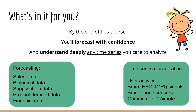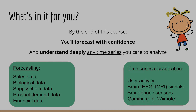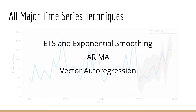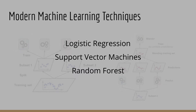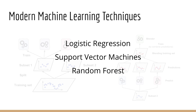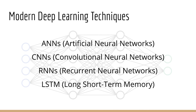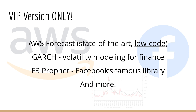You'll also learn how to classify time series data — for example, predicting user actions based on their smartphone sensors. This course will cover all major time series techniques such as ETS and exponential smoothing, ARIMA, and vector autoregression. We'll also look at modern machine learning-based techniques such as logistic regression, support vector machines, and random forest. We'll even look at modern deep learning techniques including ANNs, CNNs, and RNNs — and yes, this includes everyone's favorite: the LSTM.